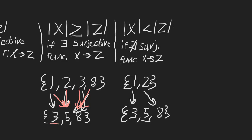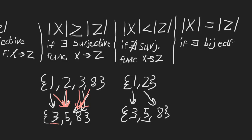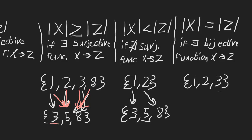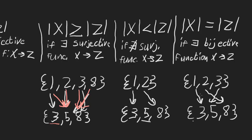Finally, the cardinality of X equals the cardinality of Z if there exists a bijective function from X to Z. For example, with {1, 2, 3} and {3, 5, 8}, mapping 1→3, 2→8, 3→5: all arrows point to different places, so it's injective, and every element in the target is pointed to, so it's surjective. Since it's both injective and surjective, it's bijective — and since a bijective function exists between these two sets, they have the same cardinality.